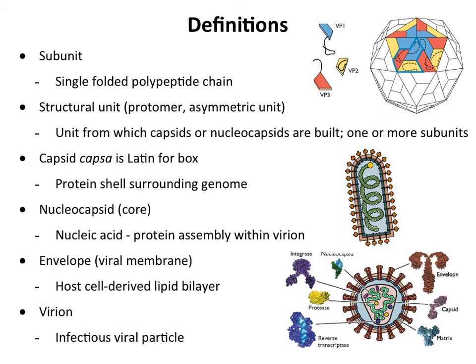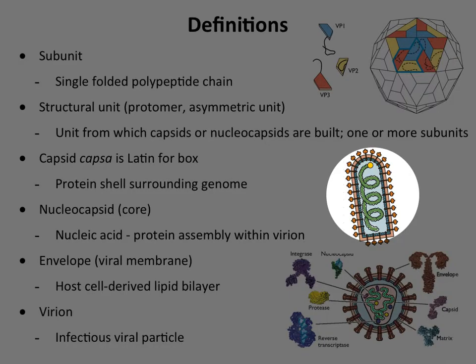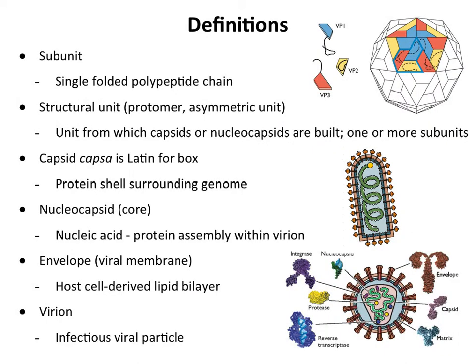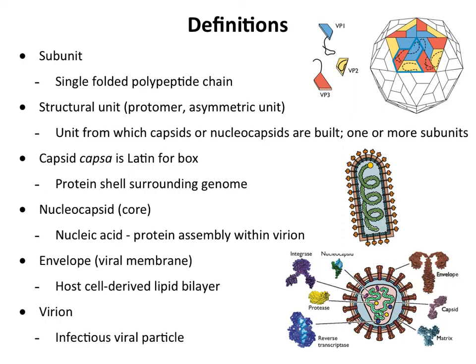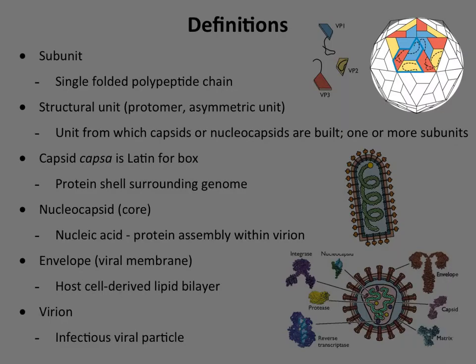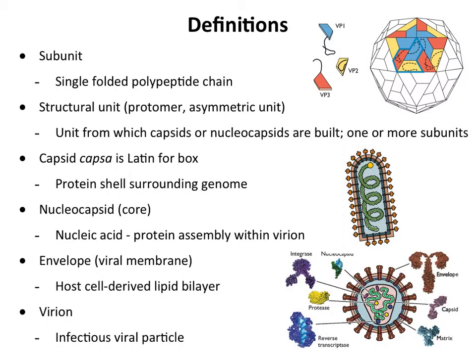The nucleocapsid is the nucleic acid-protein assembly within the virion. There are specific cases where we talk about nucleocapsids. Here, in rabies virus, this curly green molecule is a nucleocapsid — it's RNA bound to protein. It's always an RNA-protein or nucleic acid-protein complex. In this retrovirus, the same thing — this green molecule is the nucleocapsid. Poliovirus just has naked RNA inside of it; that RNA is not a nucleocapsid because it doesn't have any protein associated with it.